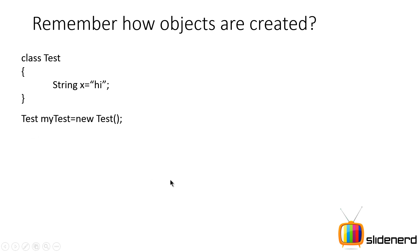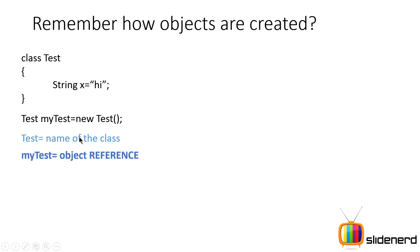Let's break this down into different pieces and try to understand what is going on. The first word 'test' is the name of the class. The second word 'myTest' is the variable we have used — it's actually an object reference. The 'test' on the right-hand side is the constructor.